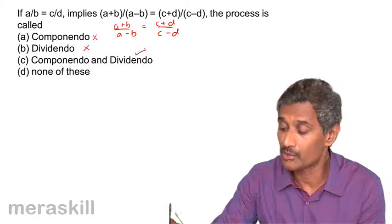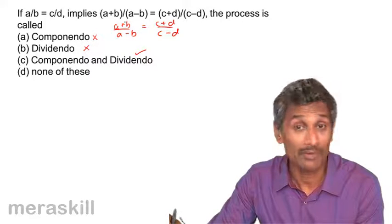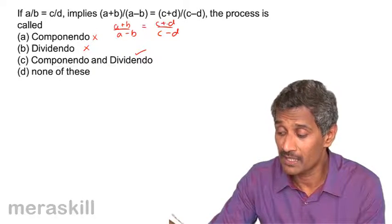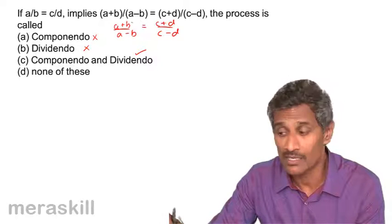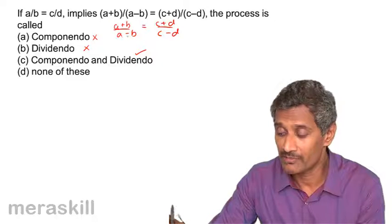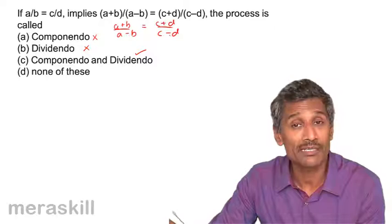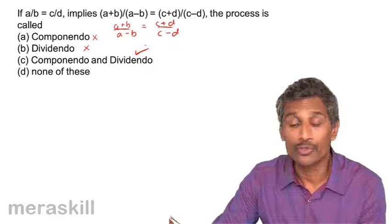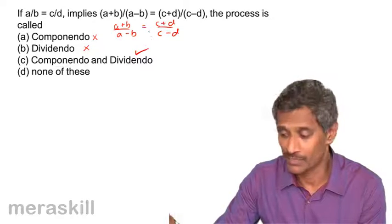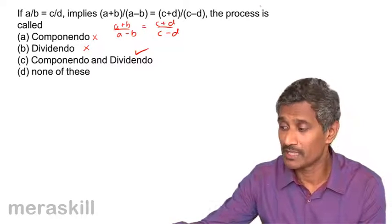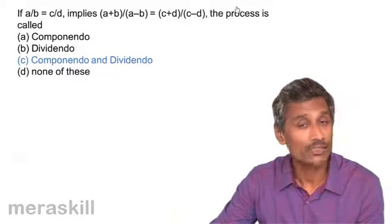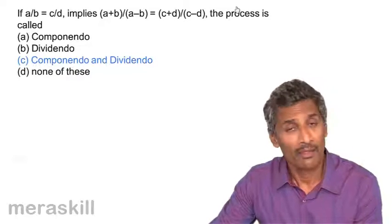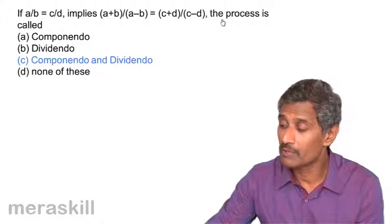Yes, it is componendo and dividendo because remember one more thing you need to take care. If it is a plus b, it has to be c plus d in the numerator. If it is a minus b in the denominator, it should be c minus d in the denominator too. So our option is going to be componendo and dividendo. And let's check whether that's what we have. Yes, it's componendo and dividendo. Let's move on to the next problem.